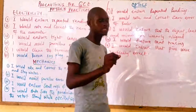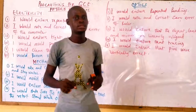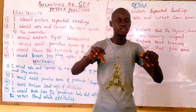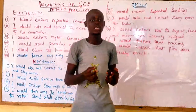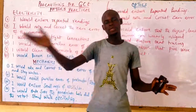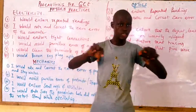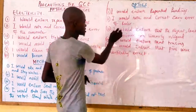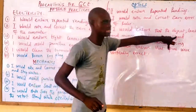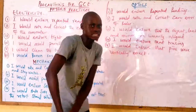The next precaution is: I would ensure that the object, lens, and mirror are linearly aligned. You use this precaution if you are given a question on a convex lens or a mirror where you have the object, the mirror, and the screen. Ensure that the object, lens, and mirror are linearly aligned — meaning they are all on a straight line — because if they are not on a straight line your values will be wrong.